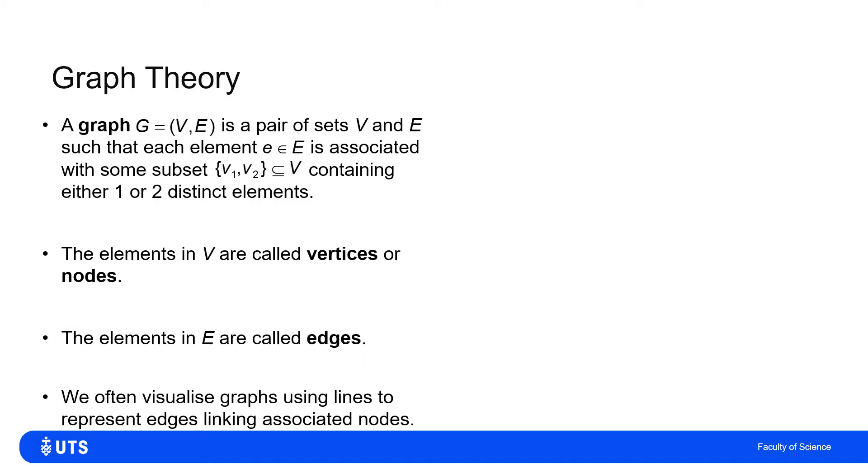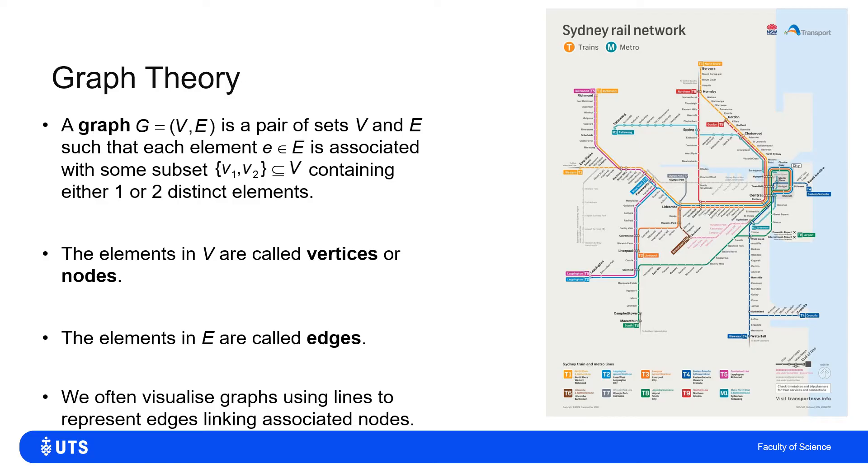Now graphs like this we see all the time in everyday life. This is a map of the Sydney rail network, and you can think of the stations as being nodes.